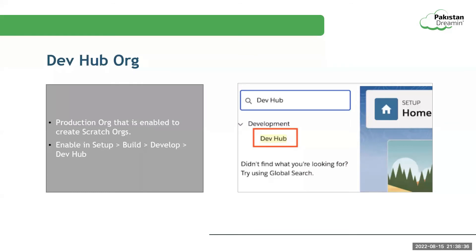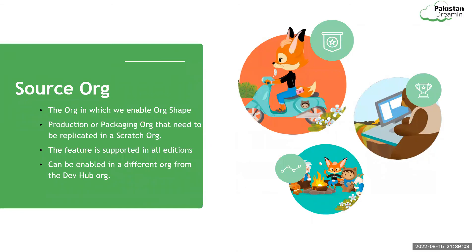Before we jump into using org shape to create scratch orgs, let us understand some more features the platform offers. A Dev Hub is the production org that is enabled to create scratch orgs. A Dev Hub can be enabled through configuration: go to Setup, enter Dev Hub, click Dev Hub under the Development section, and enable the option 'Enable Dev Hub.' Please note that once you enable this feature, you can't disable it. The source org is a production or packaging org whose features, licenses, user licenses, permissions, and preferences need to be replicated in a scratch org. It can be in a different org from the Dev Hub, but the Dev Hub needs to be authorized to access the shape from the source org.